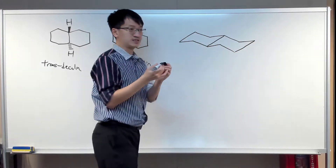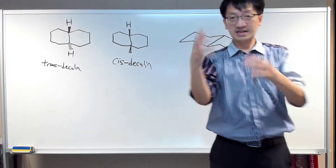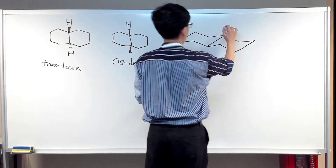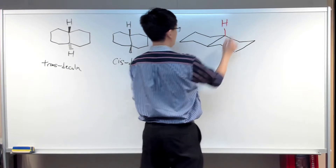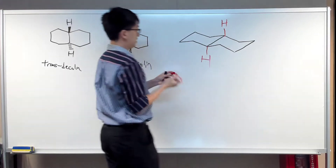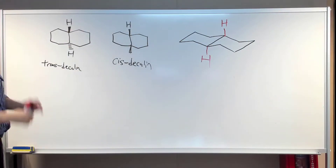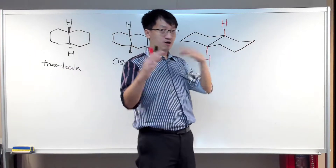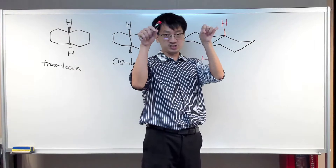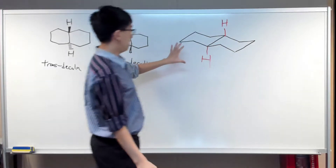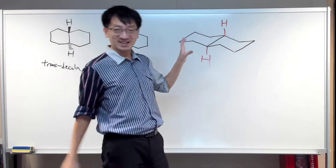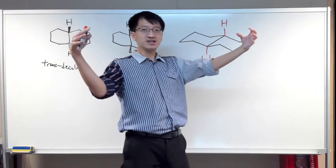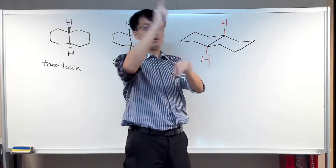I'm going to use another marker — another color — to represent the H. I'll represent it in red. The H is now pointing upwards in the axial position and the other H is pointing downwards in the axial position. I hope this is exactly what you observed earlier when I held the structure near the camera. You should now be aware that transdecaline can be drawn quite easily — just two chairs fused together with one H up and one H down.